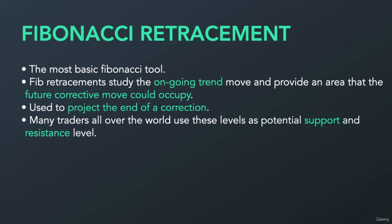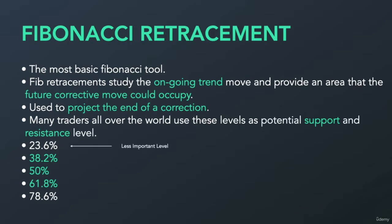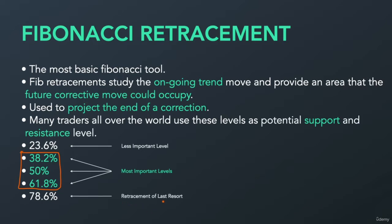We have a lot of Fibonacci ratios, but what we're going to use are 23.6%, 38.2%, 50%, and 61.8% retracement, and lastly 78.6%. The 23.6% is the less important level. 38.2%, 50%, and 61.8% are the most important levels. Many traders use these ratios to isolate support and resistance levels. Note that 50% is not actually a Fibonacci ratio, but since there's a psychological reason behind it, 50% retracement works in financial markets. And 78.6% is the retracement of last resort, or the last defense in Fibonacci ratio.